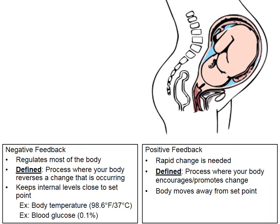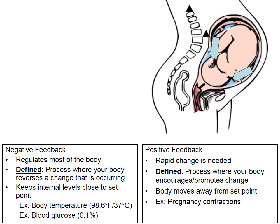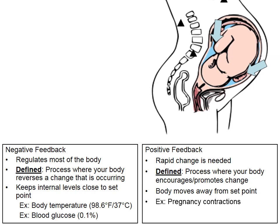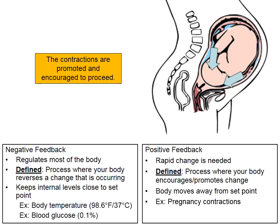A great biological example of positive feedback is the pregnancy contractions a woman experiences before giving birth. At first, the muscles of the uterus begin to stretch and contract slowly. When contractions begin, an alert is sent to the brain, which responds by sending out the hormone oxytocin — represented by the black triangles. The muscles of the uterus respond to oxytocin by contracting even faster, with the goal of delivering the child more quickly. The contractions are not stopped and returned to zero — that would be negative feedback. Instead, the contractions are promoted and allowed to proceed, making this a great example of positive feedback.